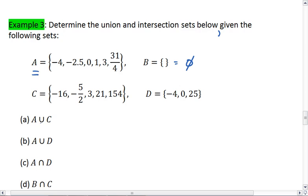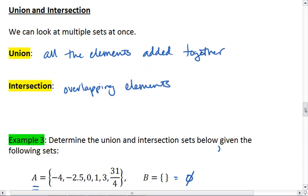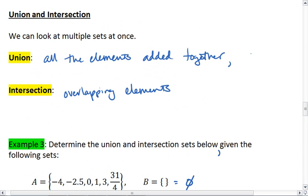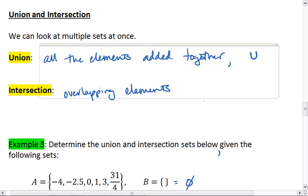So if we're looking at the union, make sure you know this notation. For union, we use what looks like an uppercase U. For intersection, we look at the upside down version of that uppercase U. It kind of looks like an N.